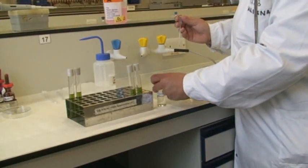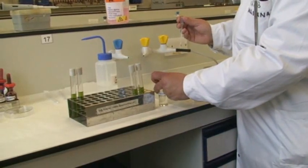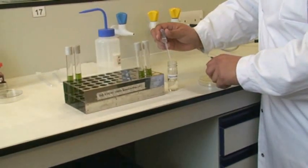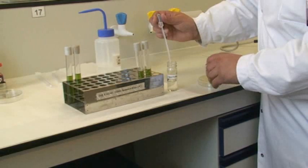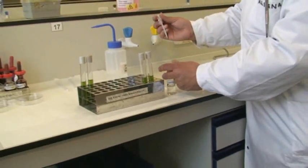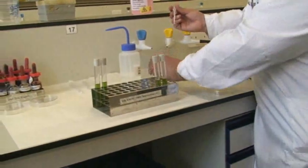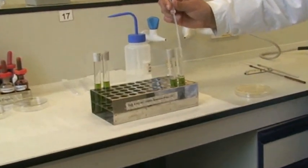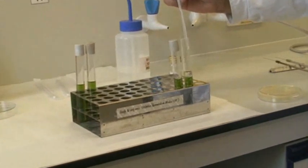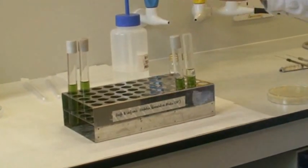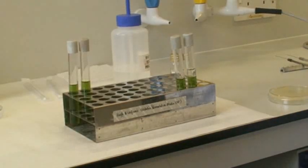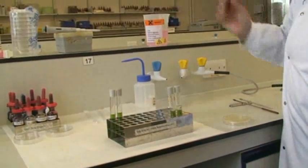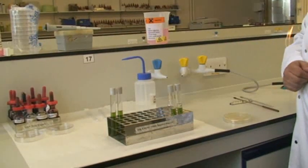So taking some liquid paraffin, probably needs about that much, and then just topping up one of those tubes with paraffin oil just to simulate anaerobic conditions. And that would be sufficient paraffin oil there. And then discarding this into your beaker, and that's ready for incubation. Thank you.